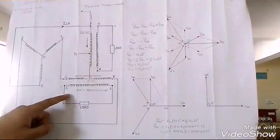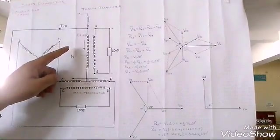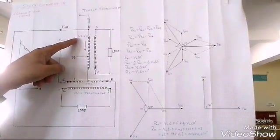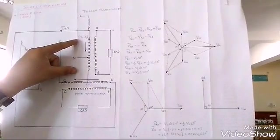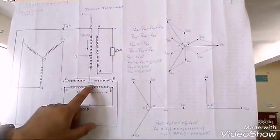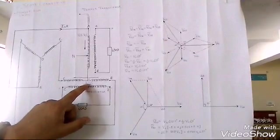Two identical transformers, out of which one transformer utilizes 86.7% of the total number of turns from the primary, and the second transformer is center-tapped at 50%.